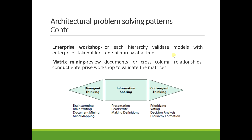The fifth technique is matrix mining. We carefully review documents for any cross-column relationships — that is, sentences involving more than one column. We keep track of each relationship including the document, quoted text, and page number, then conduct an enterprise workshop to validate the matrices. Notably, all five techniques use documents rather than interviews, because documents are multi-person content, whereas interviews are less reliable as they depend on a single person's opinion.